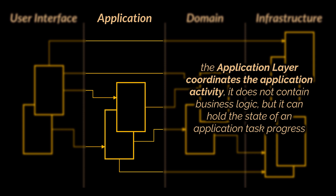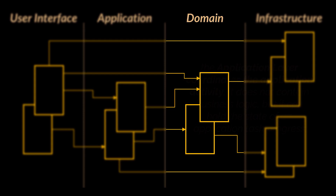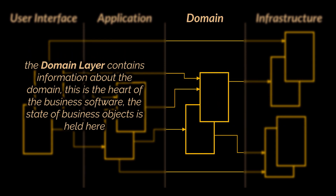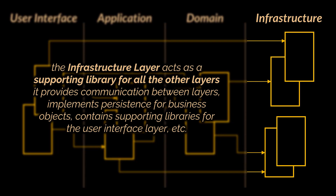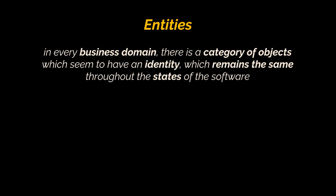The application layer can hold the state of an application task's progress. The domain layer contains information about the domain — this is the heart of the business software and the state of business objects is held here. The infrastructure layer acts as a supporting library for all the other layers: it provides communication between layers, implements persistence for business objects, and contains supporting libraries for the user interface layer.